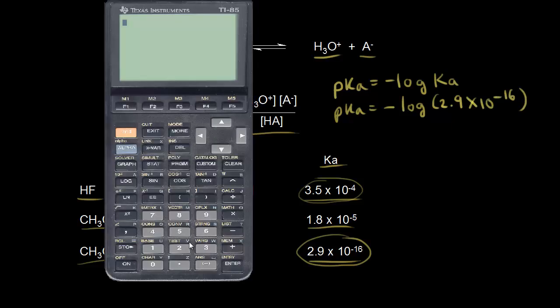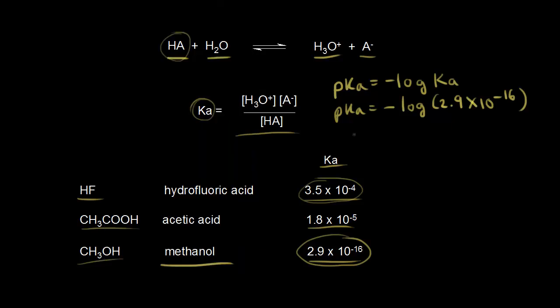So let's get out the calculator and let's do that. Negative log of 2.9 times 10 to the negative 16. And this gives us 15.54 when we round that, so the pKa of methanol is equal to 15.54.